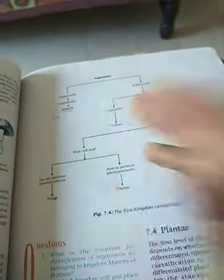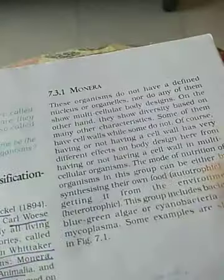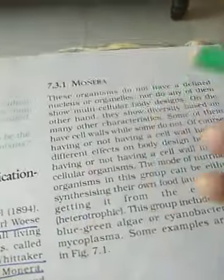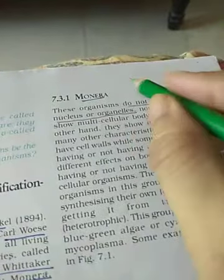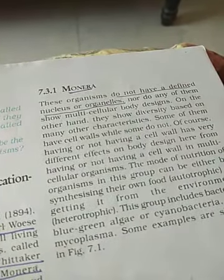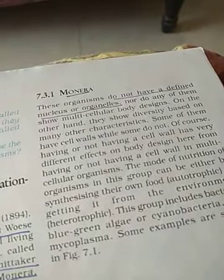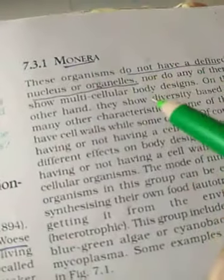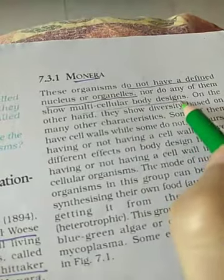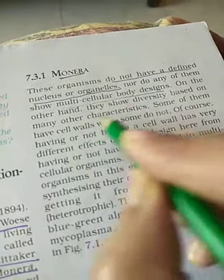Now, in this category, the first point is that Monera's organisms do not have any defined nucleus or organelles. Prokaryotic is a primitive type. In the primitive type, there is no nuclear membrane, no nucleoplasm, or anything. There is no well-defined nucleus in the prokaryotic cell. It is very hard to recognize the nucleus. There is no multicellular body design and no cell organelles.